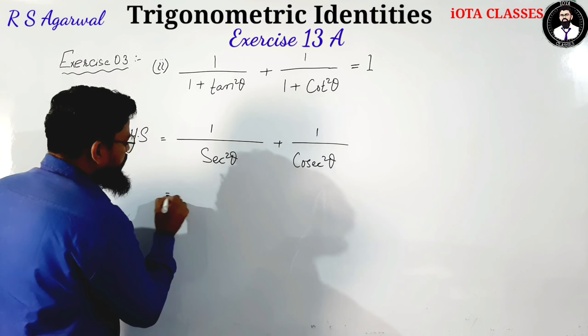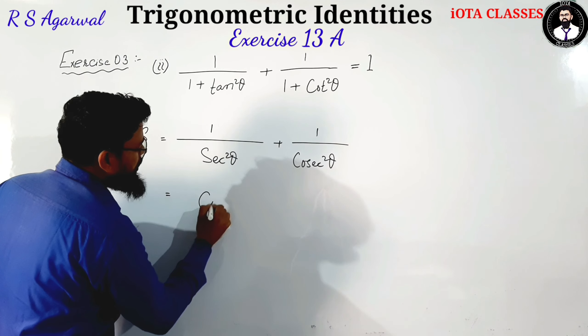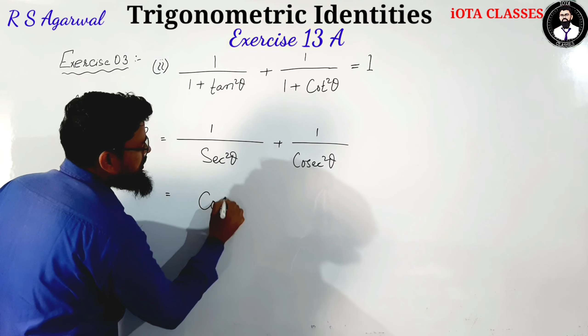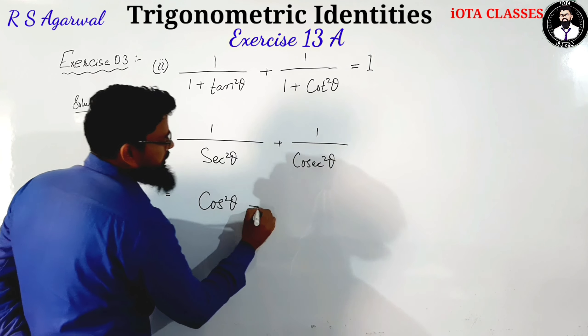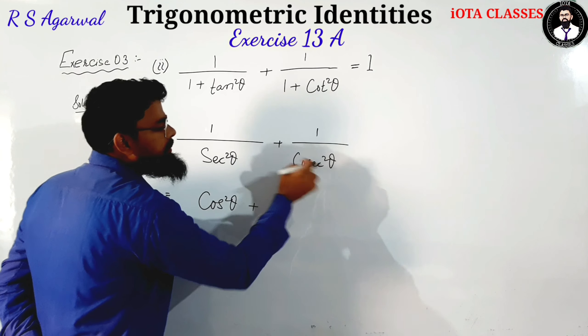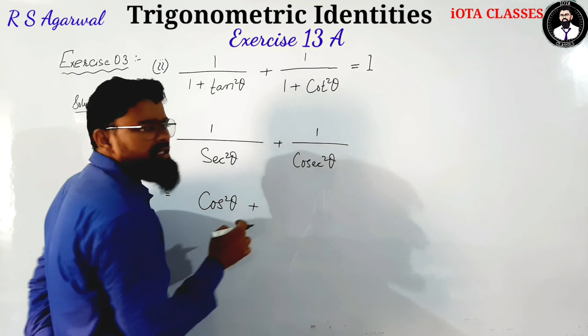1 by 1 plus cot square theta. What is the formula? This is our formula: cos square theta.